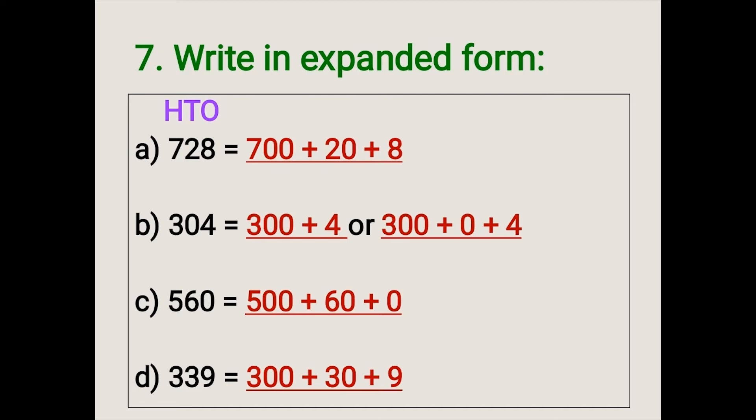In order to write the expanded form, we have to know the place value of the digits. A: 728. As we can see here, 8 is in the 1's place, 2 is in the 10's place, and 7 is in the 100's place.